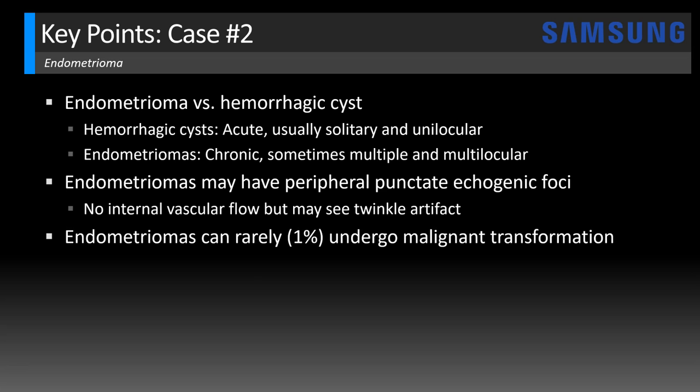It is important to keep in mind that rarely — about 1% of the time — endometriomas can undergo malignant transformation. This transformation is typically seen only with larger masses and in patients over 40 years of age. The two malignancies that endometriomas most commonly transform into include endometrioid carcinoma and clear cell carcinoma, both subtypes of epithelial ovarian tumor.